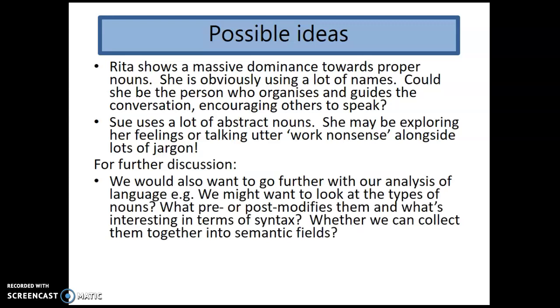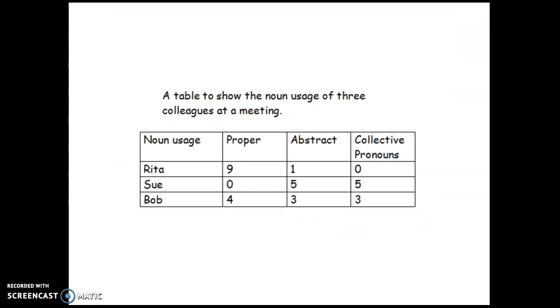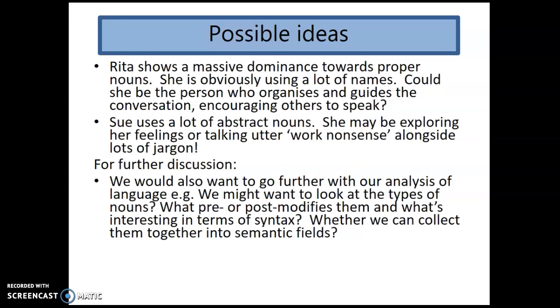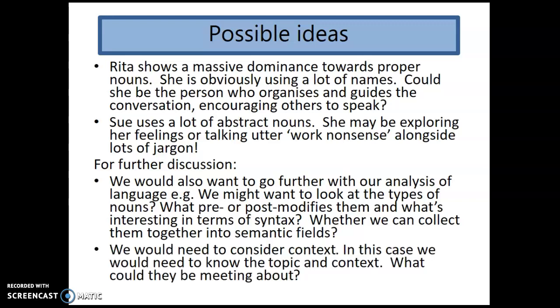Now, we would also want to go further with our analysis of language. Might want to look at the types of nouns a bit more. We might want to look at what pre-modifies them, what post-modifies them, and what's interesting with the syntax surrounding those nouns. Can those nouns be collected into specific semantic fields? So we start off with a list of numbers, and we're now starting to go deep into the language. We're starting to really explore. We're starting to, what's this task again? Oh, yeah, language investigation. We're starting to investigate, aren't we? And once we've done that, we'd think about the context. We'd need to know about the topic and the context, and what they could actually be meeting about to take this further, wouldn't we?